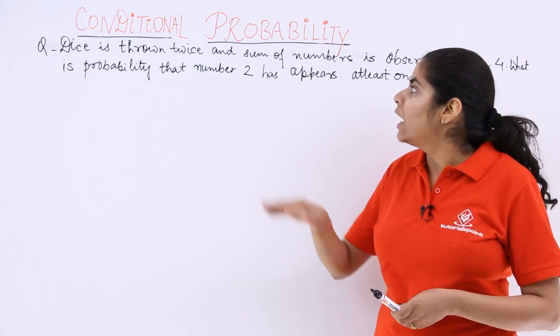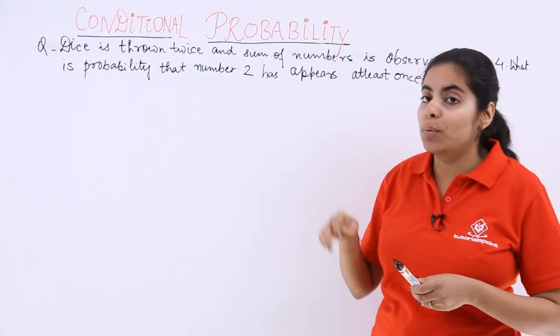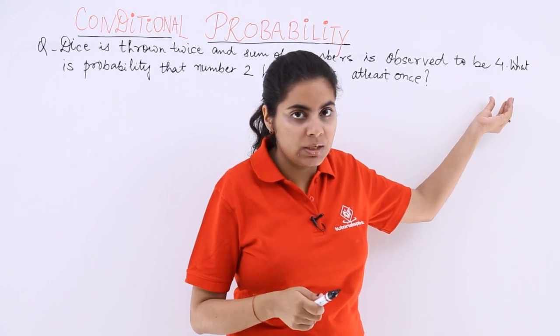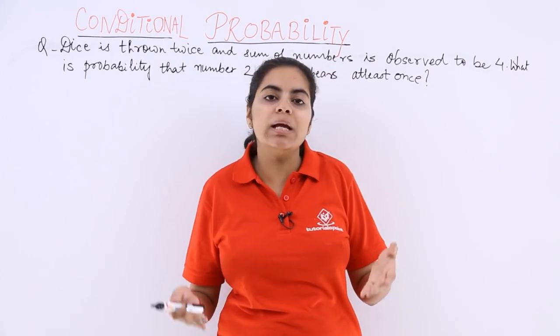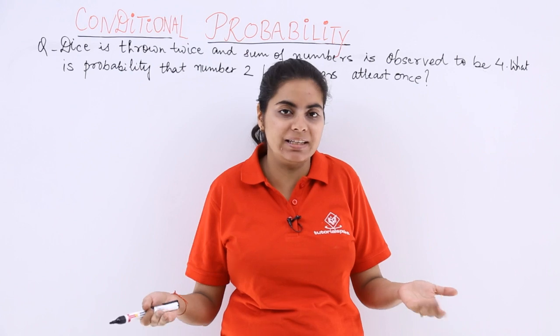So there is a dice which is thrown two times and sum of numbers is observed to be four. So dice is there which is thrown two times. You know how many sample spaces and how many possible cases are there.